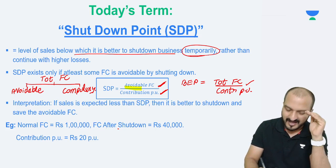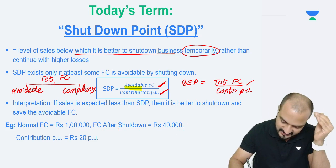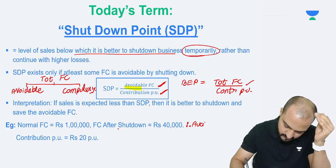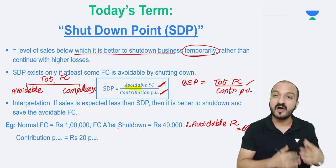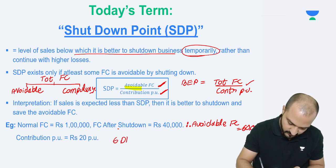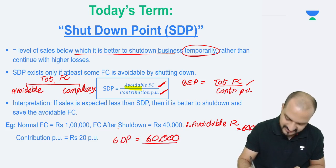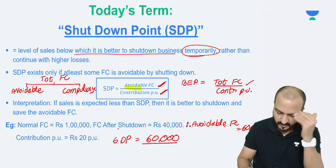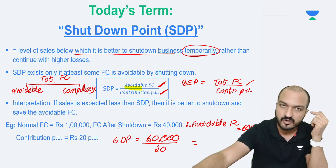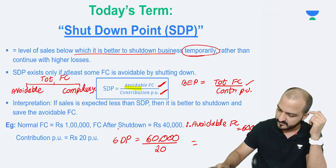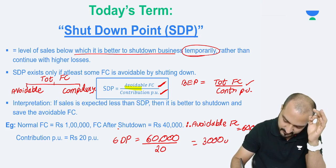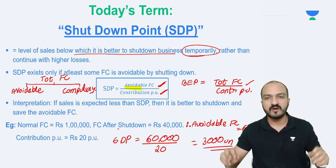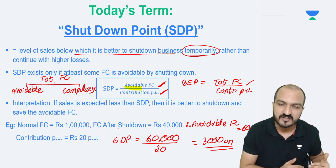For example, say my normal fixed cost is 1 lakh. After shutdown, my fixed cost will still remain 40,000. So avoidable fixed cost is the balance 60,000. The shutdown point will be — as per the formula — 60,000 avoidable fixed cost divided by contribution of 20 per unit, which equals 3,000 units. So, if you expect your demand to be more than 3,000 units, then you continue doing business; if you expect demand to be less than 3,000 units, it is better to shut down.